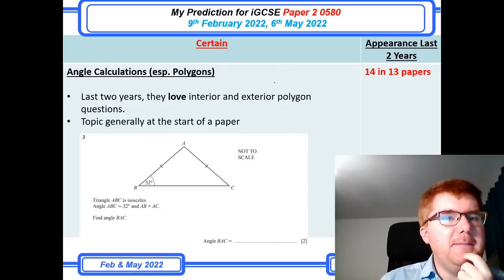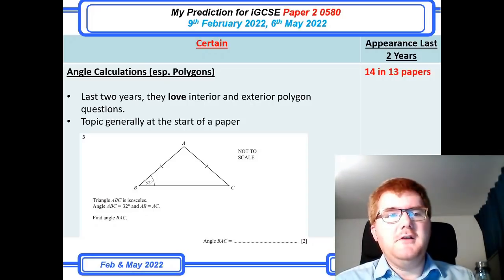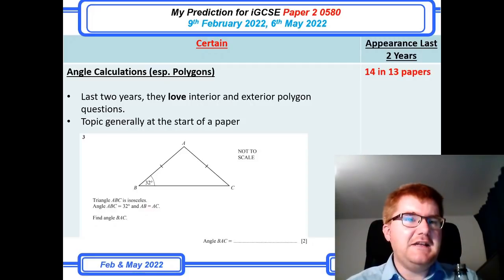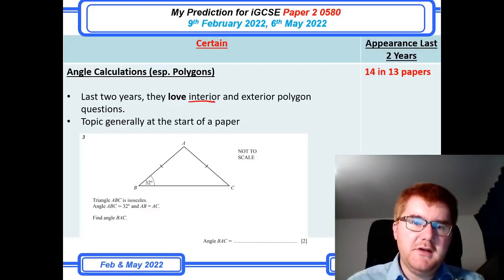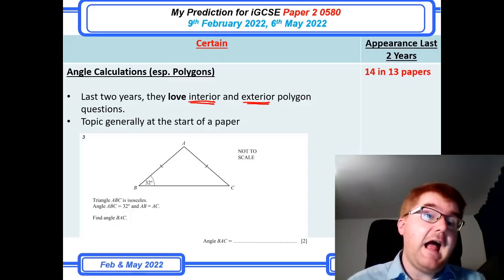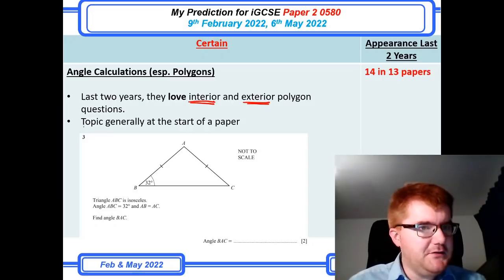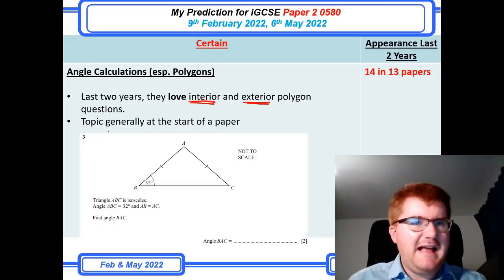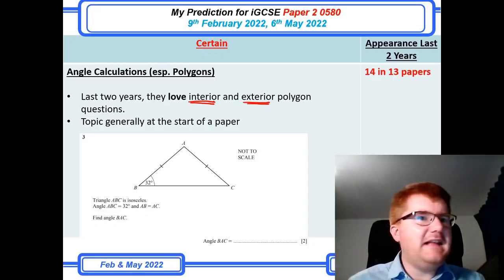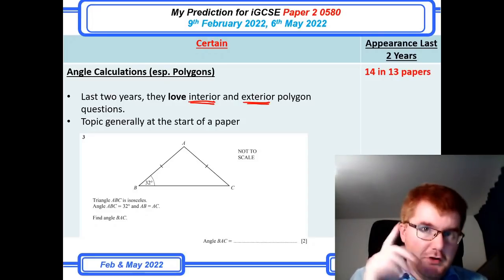Angle calculations — and especially polygons. In the last two years, they love interior and exterior polygon questions. If you don't know what interior and exterior angles of polygons mean, look this up — it's very popular. On the other side, these topics generally appear at the start of a paper, like question three, which just requires your basic angle facts to work out missing angles. Not too many marks, but it's one you know is going to turn up, so make sure you get those marks at home.